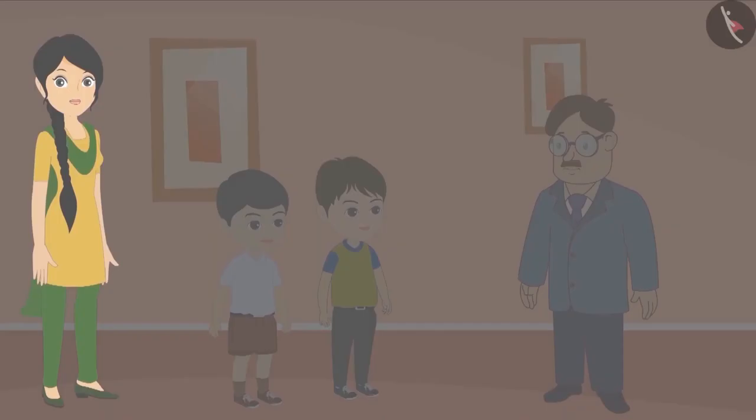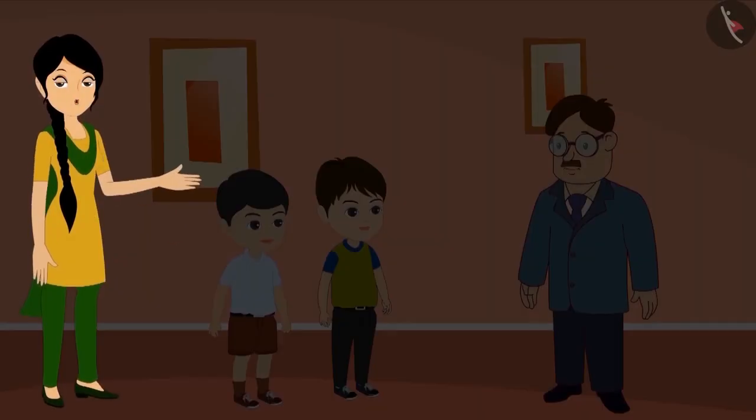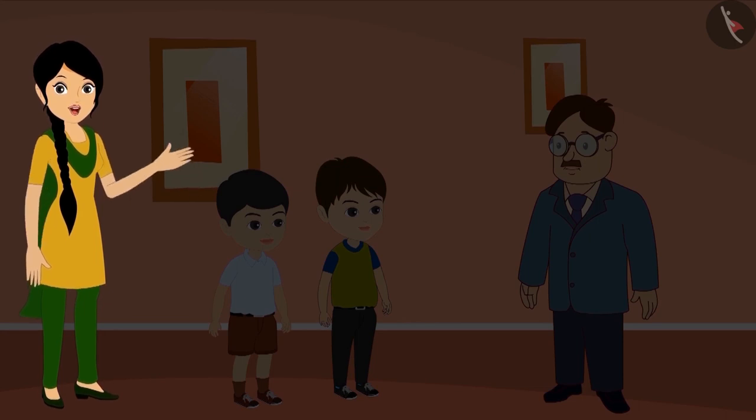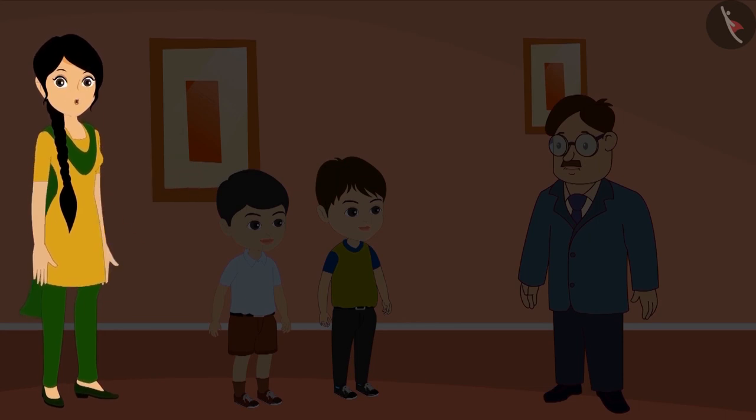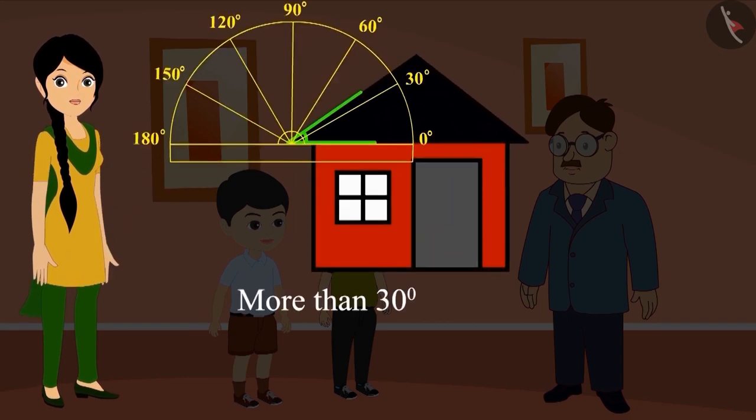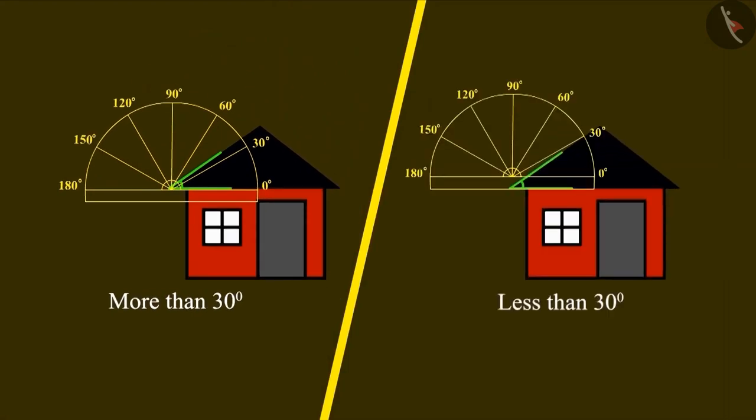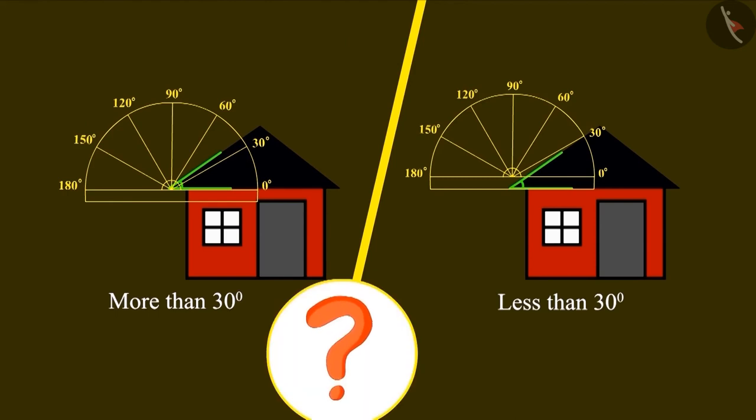Both Golu and Bholu were trying to solve the same question but their answers were coming different. According to Bholu the measurement of this angle is more than 30 degrees and according to Golu the measurement of this angle is less than 30 degrees. Both of them went to their uncle to find out whose answer is correct.